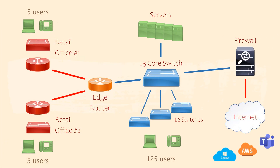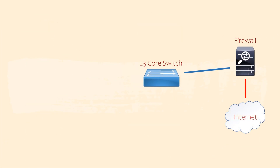Now for the internet connection. Here we have a firewall that's connected to both the core switch and the internet. To keep it simple, we can think of the firewall as a router with some advanced security features. We'll talk about those features in another video.